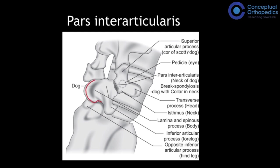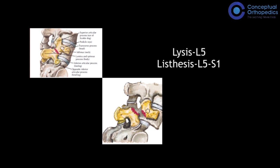The scotty dog: the superior articular process is the ear, the inferior articular process is the front leg, and the neck of the dog is formed by the pars interarticularis. All forces during jumping, turning, and twisting go toward this neck — it is the weak link. A break at the pars is called spondylolysis (spondylo = vertebra, lysis = break). A 'dog with a collar' on the neck represents spondylolysis, most commonly occurring at the L5 level.